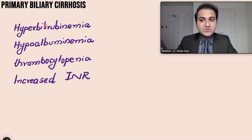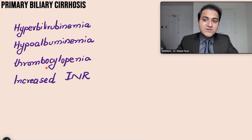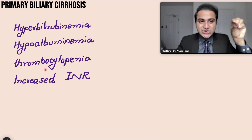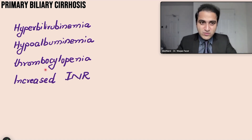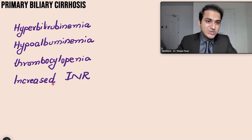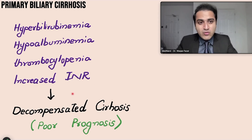In patients with PBC, if you see hyperbilirubinemia, hypoalbuminemia — because excessive liver damage impairs albumin production — thrombocytopenia from splenomegaly destroying platelets, and increased INR due to deficiency of vitamin K-dependent factors 2, 7, 9, and 10, this indicates the patient is progressing to decompensated cirrhosis, indicating a poor prognosis and warranting liver transplant.